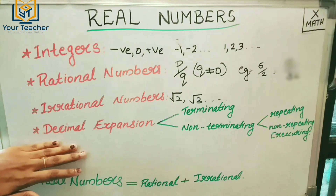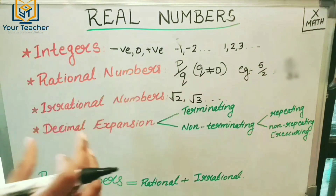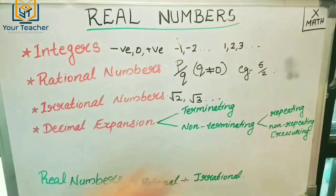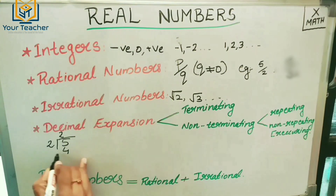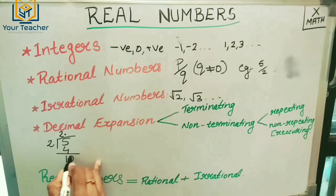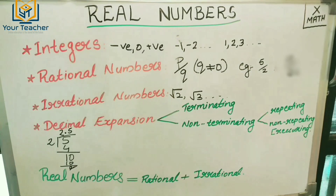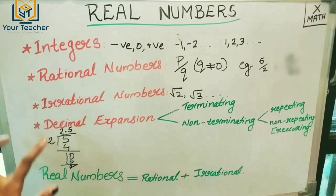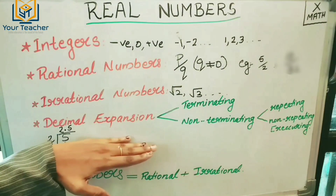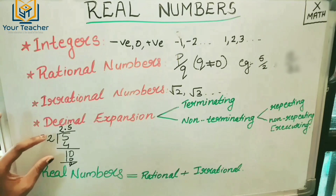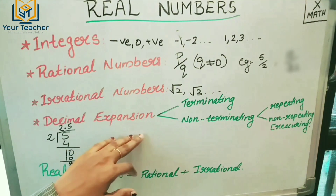The next one: Decimal Expansion. For rational numbers, we use the decimal formula. To convert, for example, 5 by 2: divide 5 by 2. We have to study decimal expansion and ask what type of decimal expansion a number has.